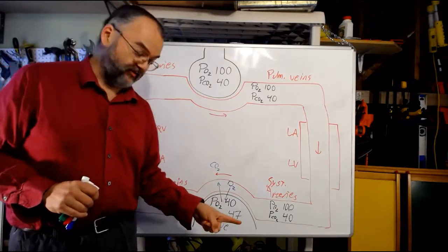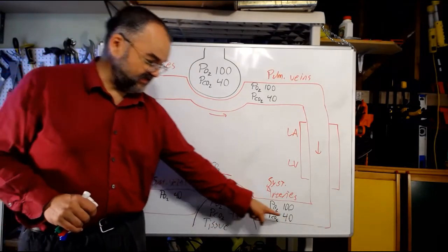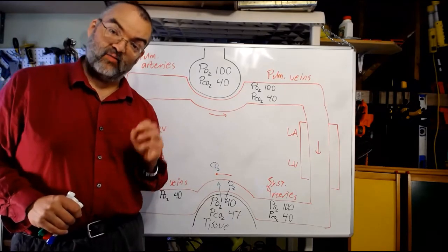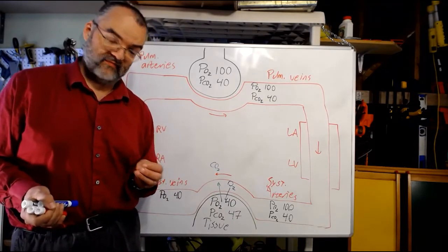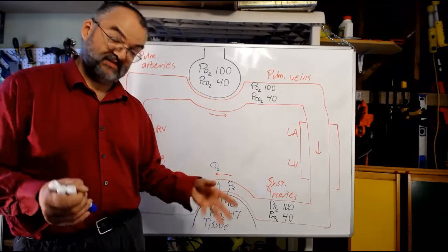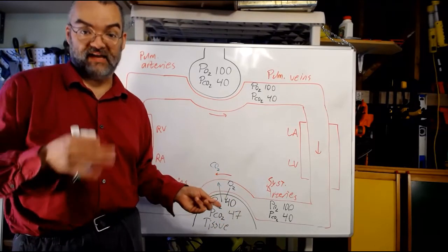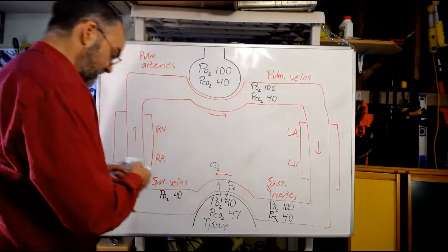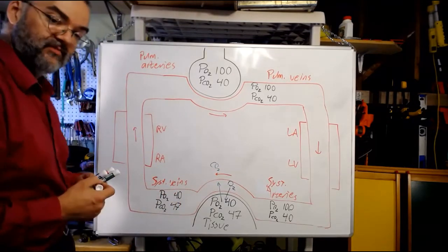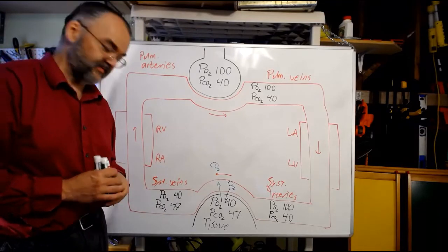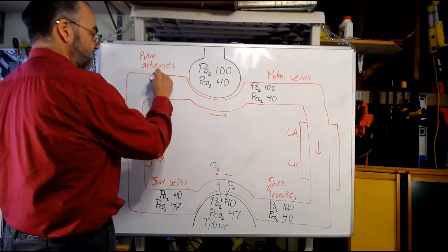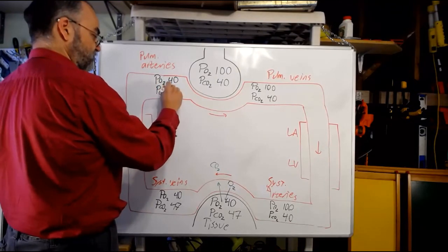So the pCO2 coming away from the tissue in the systemic veins is about 47 on average. That blood goes back through the right atrium and right ventricle, which don't change it. So in the pulmonary arteries, pO2 is 40 and pCO2 is 47.